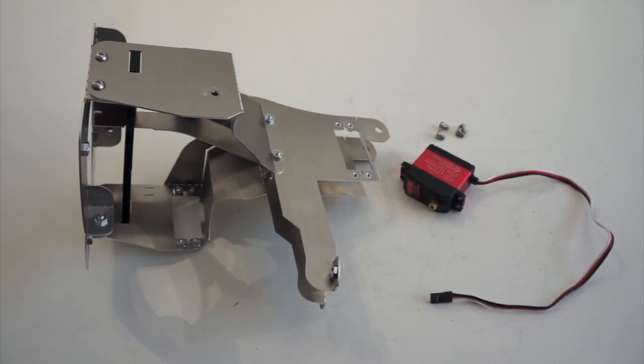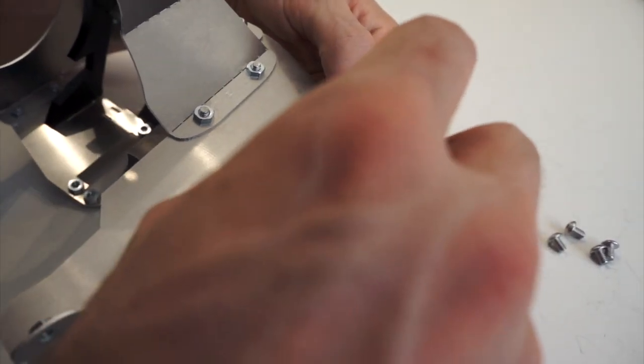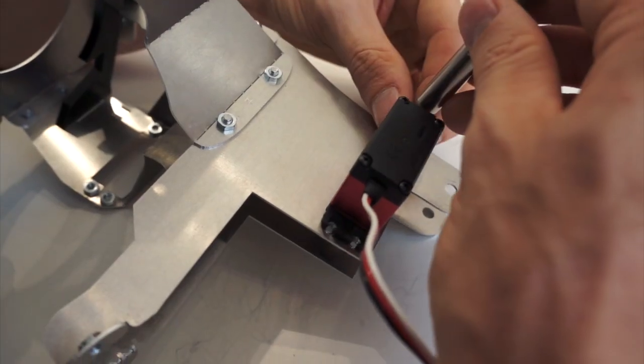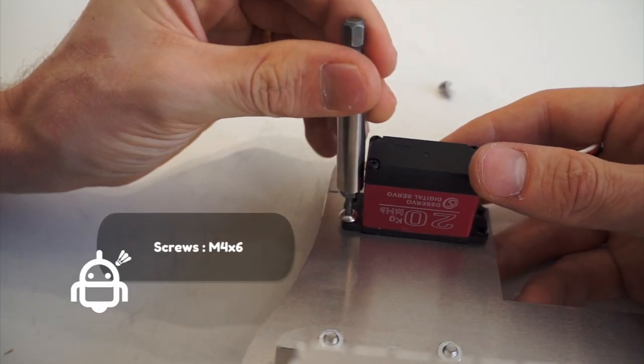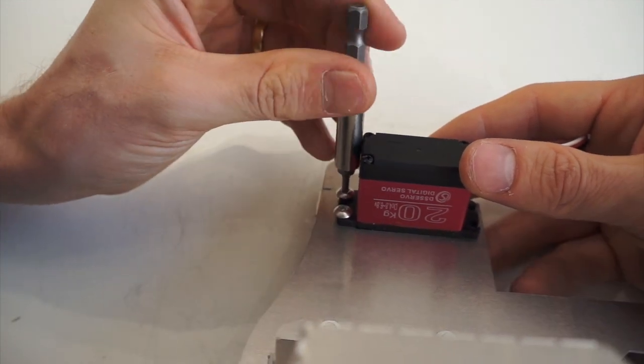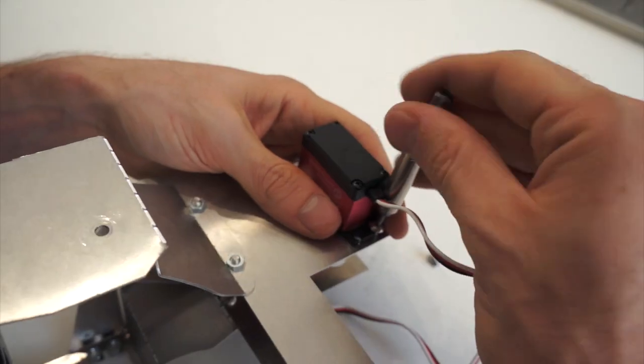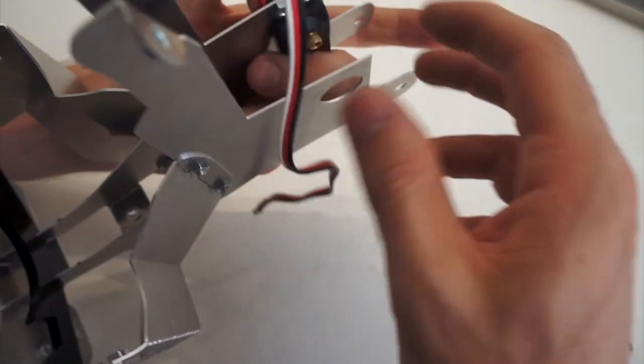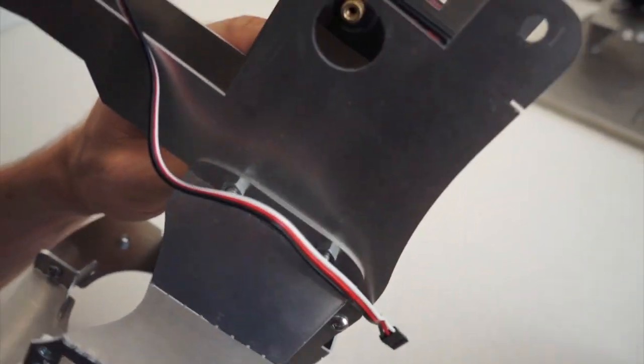Servo motors, so it's really easy. The nuts are already inserted in the metal parts so we just have to screw the servo motor as shown. Just pay attention to the servo's orientation, it has to be oriented like this.